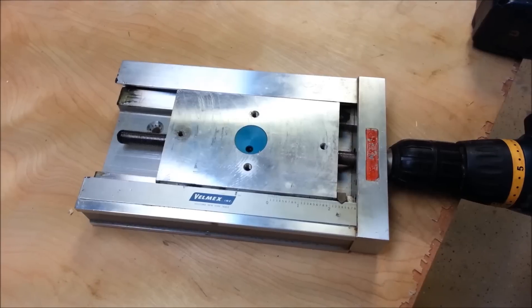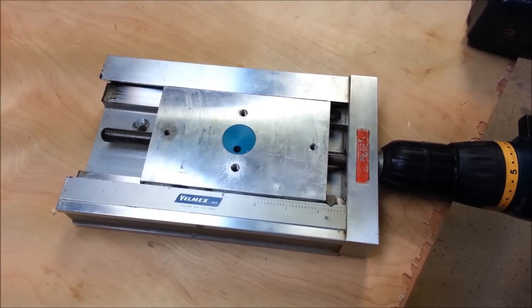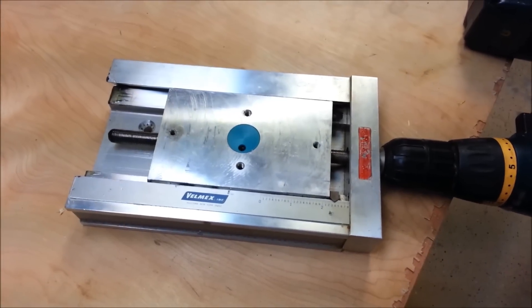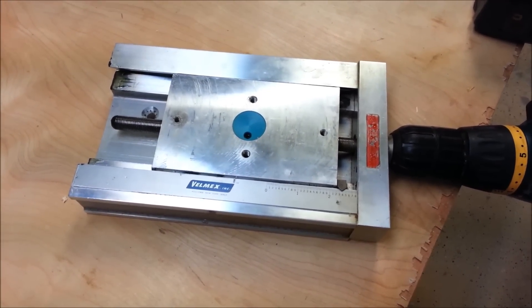This is a little sliding table that came off of some retired equipment at work. I've had it for a while and finally decided I can use it for the Z axis on my mill.